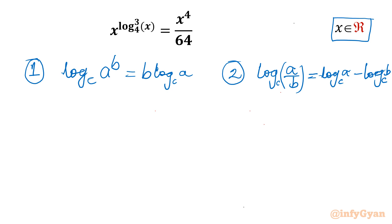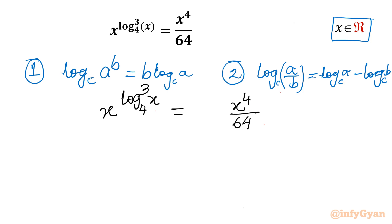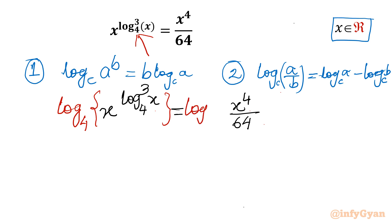Now I will use both properties while solving. I will write our given equation: x power (log_x base 4) whole cube equals x power 4 divided by 64. Now I will consider log of both sides with base 4, because in our equation the clue is already given with base 4.